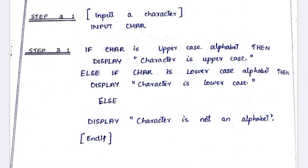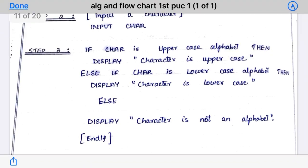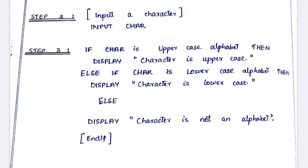Step three will be: if the character is an uppercase alphabet, then display 'character is uppercase'. Else if — and it is else if because the question says to use else-if ladder — else if the character is lowercase, then display 'character is lowercase'. Else display 'character is not an alphabet'. This is the logic.